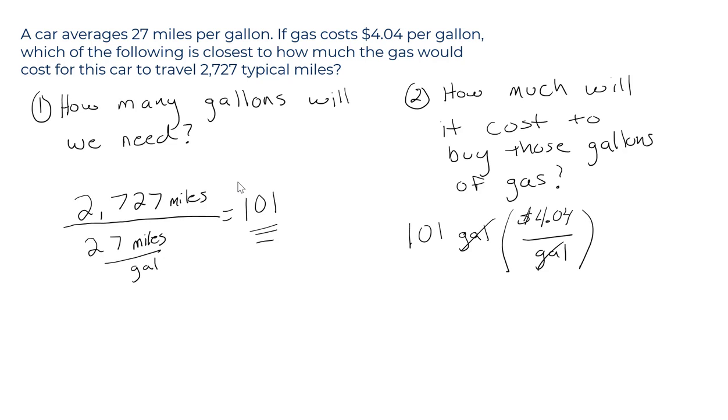Gallons on the top, gallons on the bottom cancel. $4.04 times 101. It's going to be just a tiny bit more than $400. It's going to be $408.04.